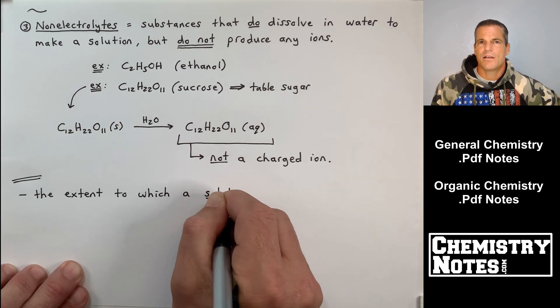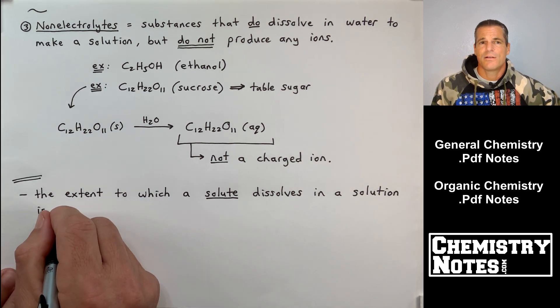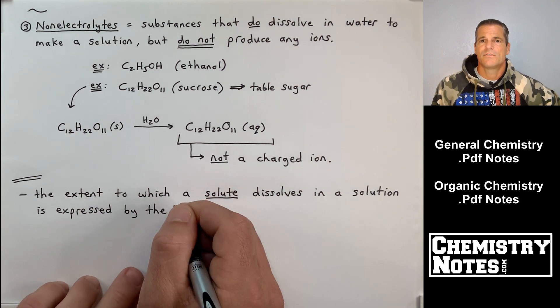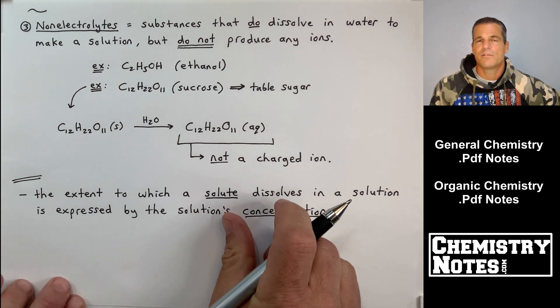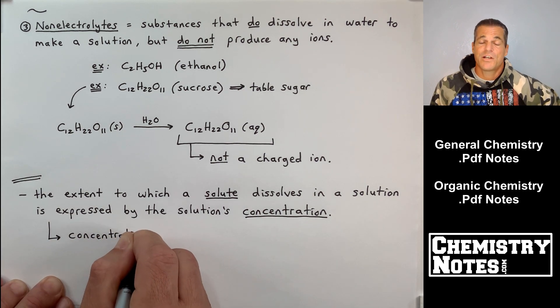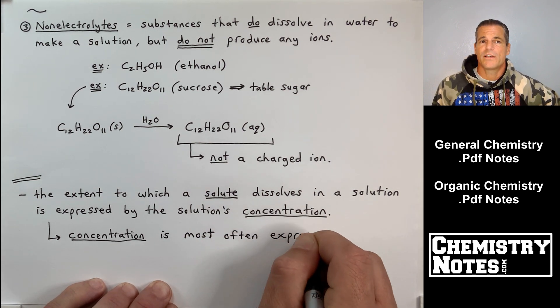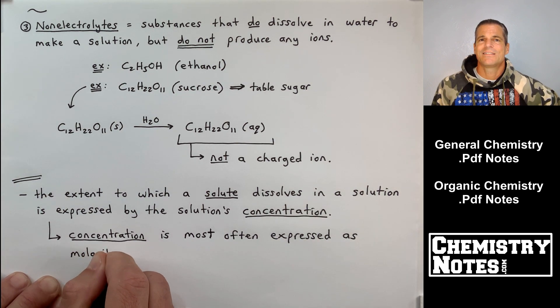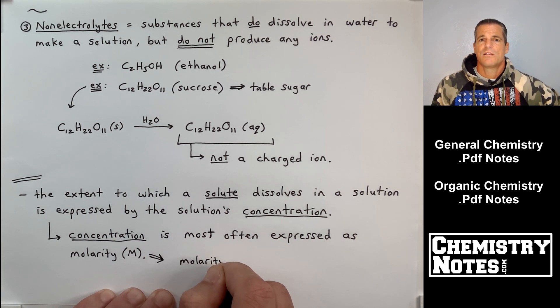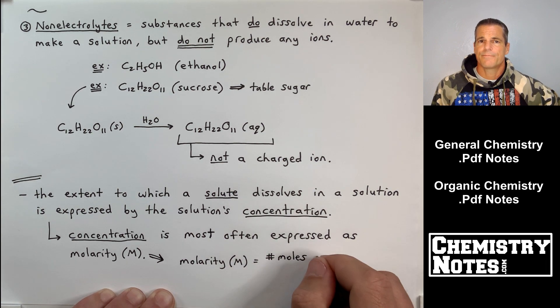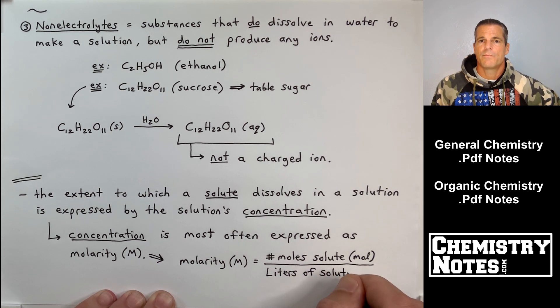So we're going to wrap up today's video here by talking about how we measure the concentration of a dissolved solute. The extent to which a solute dissolves in the solution is expressed by the solution's concentration. Now, there are a lot of ways to express concentration, but the most popular is by far, in general chemistry anyway, molarity. So concentration is most often expressed as molarity, and molarity is given the symbol capital M.